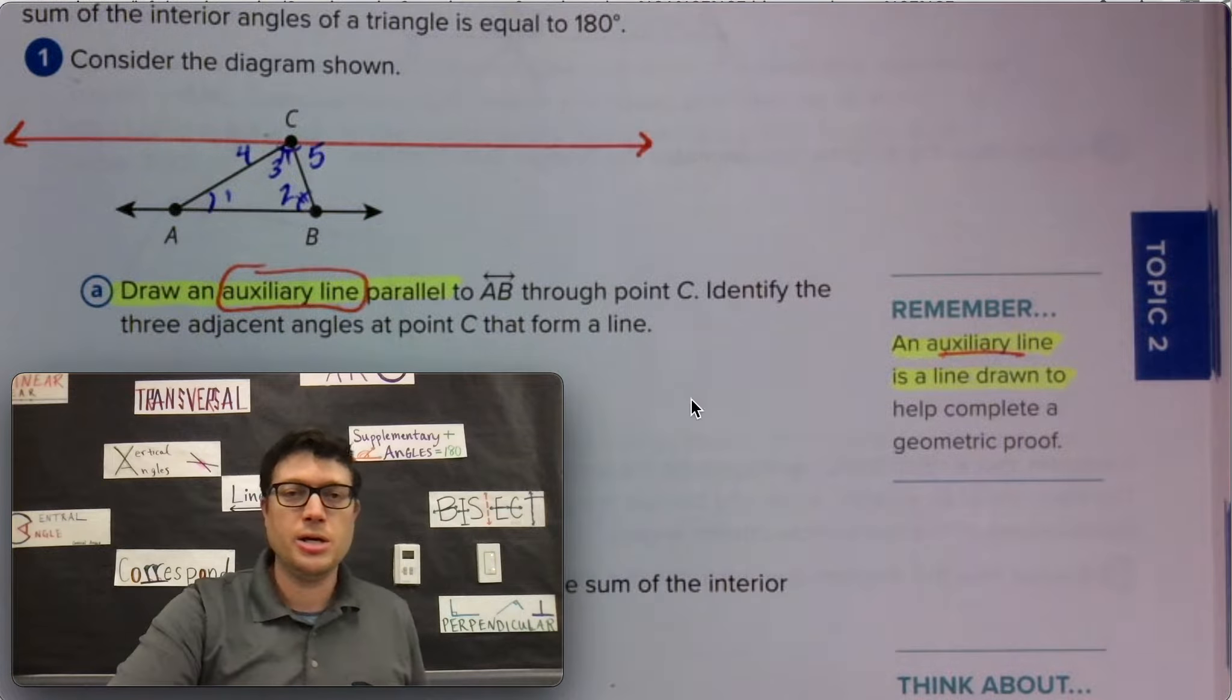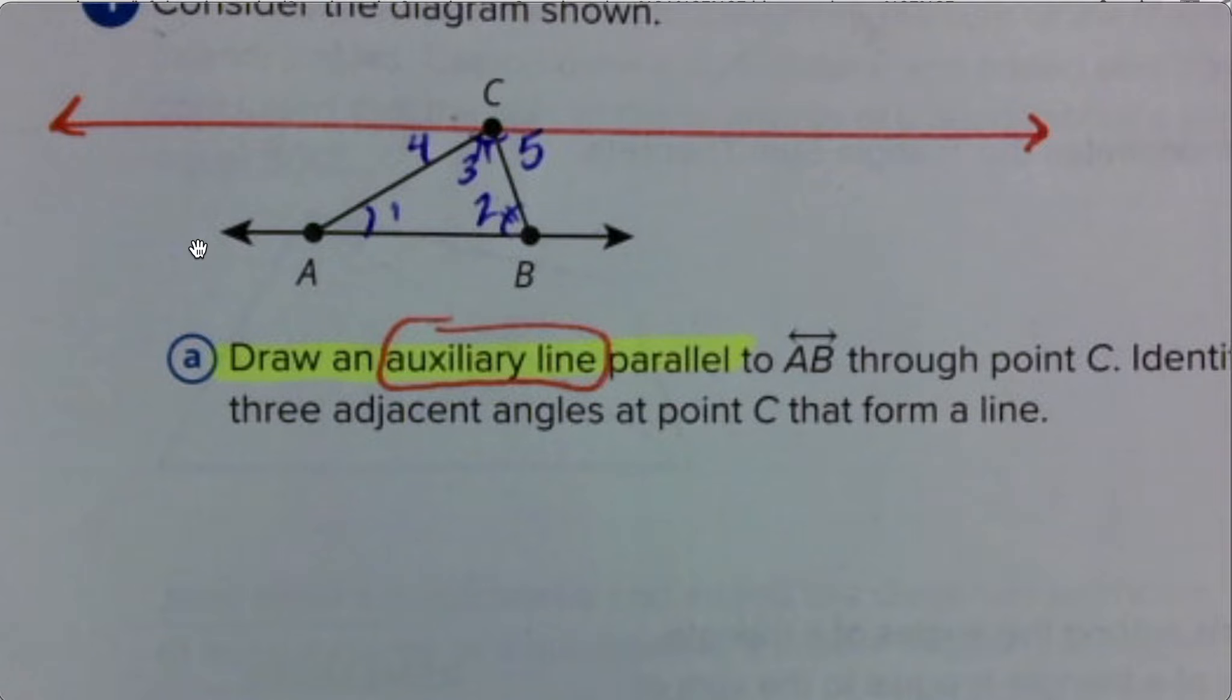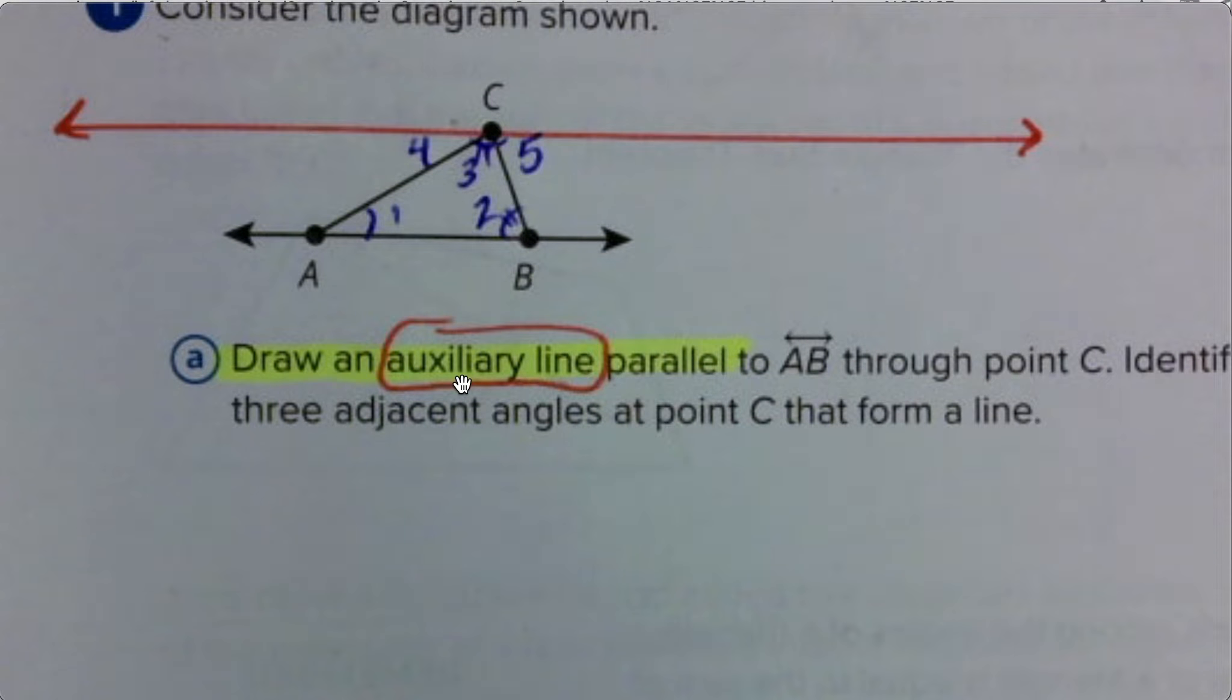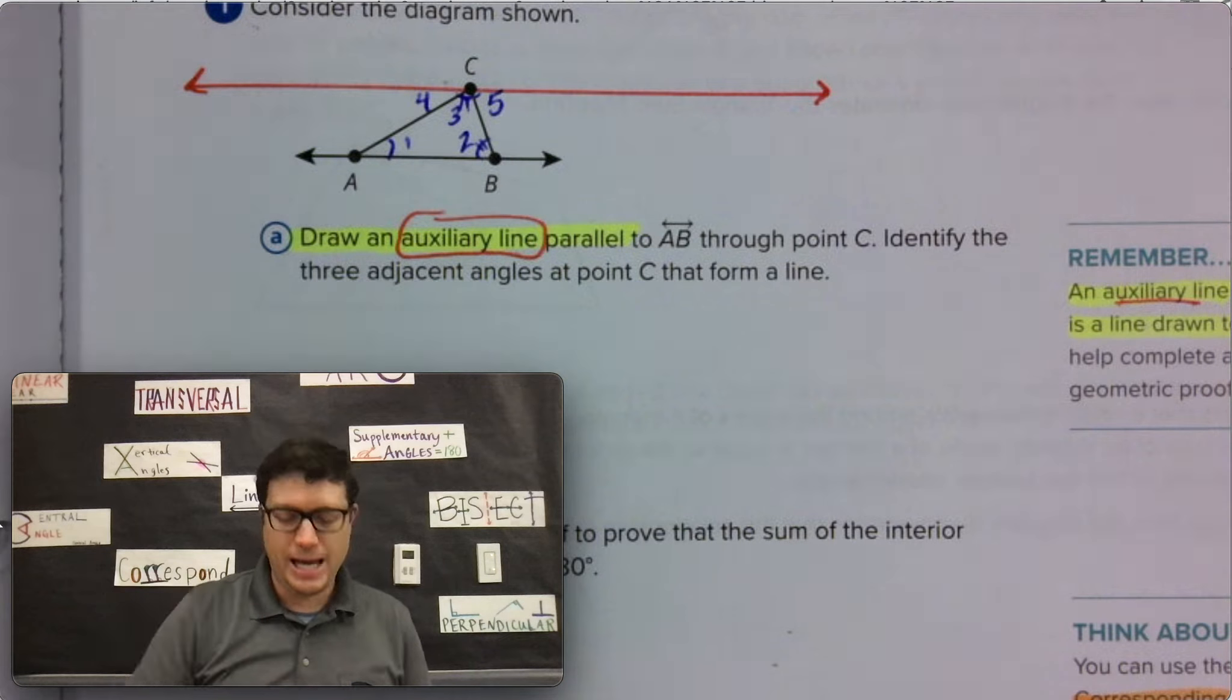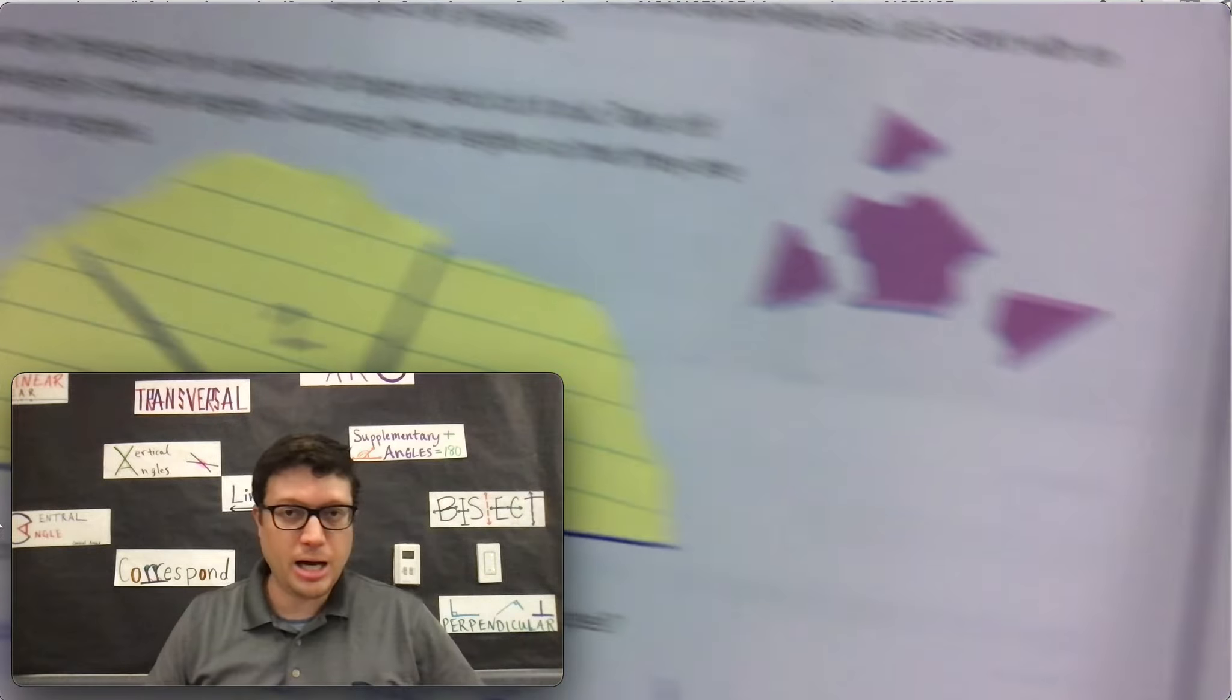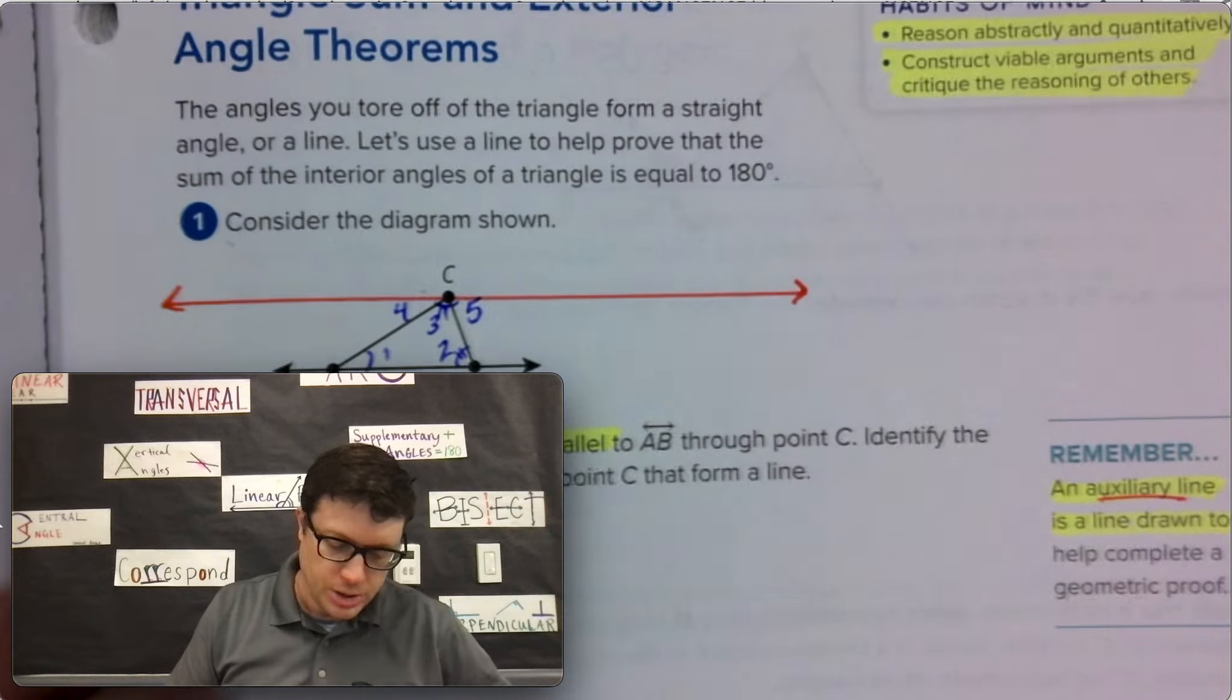The question is, what do you know about angle three, angle four, and angle five? In other words, how would you describe their relationship? You might say that those three angles actually meet along the edge of the auxiliary line, something kind of like the pieces of our triangle from page 322.